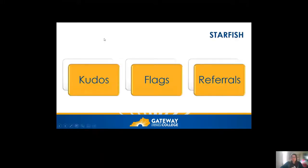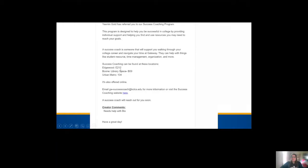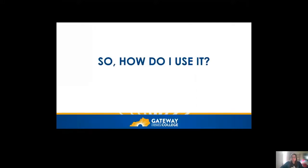The last type of communication is referrals. This isn't necessarily telling you good or bad progress — it's connecting you to resources. A staff member might raise one if you've mentioned needing help in a specific area, or you can raise your hand yourself and say you need help with tutoring, disability services, financial aid, or any other resource. Someone will then reach out to you. Here's an example of a referral for the Success Coaching Program — it tells you exactly why it's being raised and includes a link to the website.